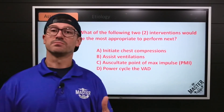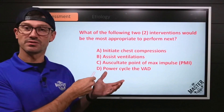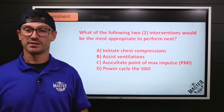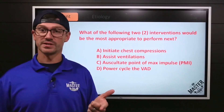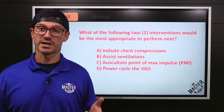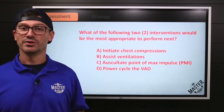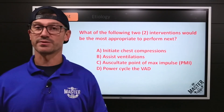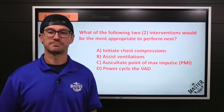So you're asked: which of these two following things are most appropriate to do next? Initiate chest compressions and assist ventilations, oscillate over the point of maximum impulse — the PMI — or power cycle that VAD? Let's dive into this.